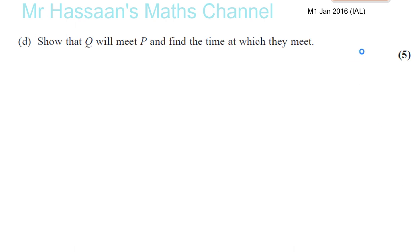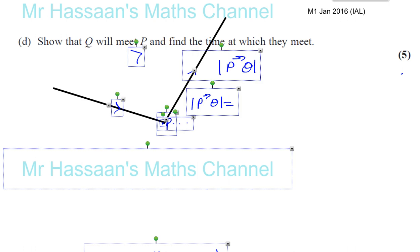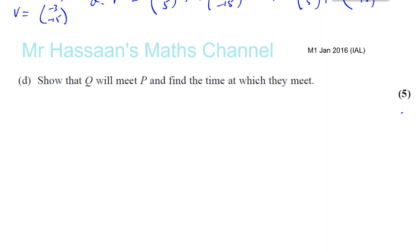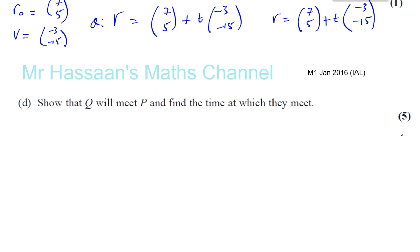Now for part D. Part D of January 2016 IAL, question mechanics and vectors. It says show that Q and P will meet and find the time at which they meet. So we already worked out what the vectors for P and Q are.